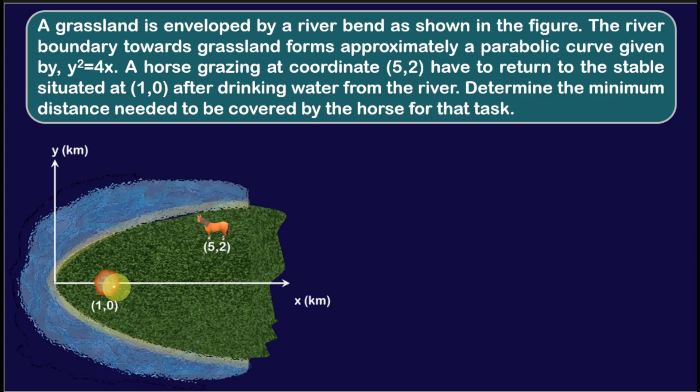You guys know much better mathematics than me — just by looking at the curve and this coordinate, you can tell that this point (1, 0) is a focus point. So this horse has to return to the focus point after drinking some water from the river, and it wants to minimize the total distance travelled. I'm sure many of you would have guessed the solution just knowing the reflective property of this parabola.